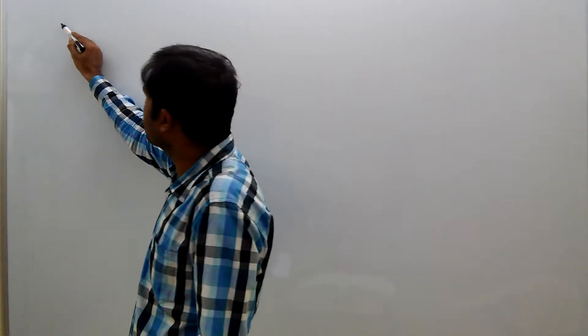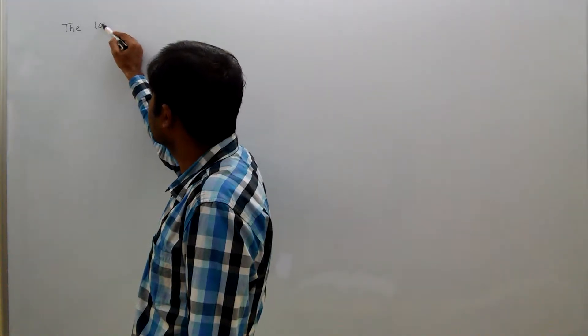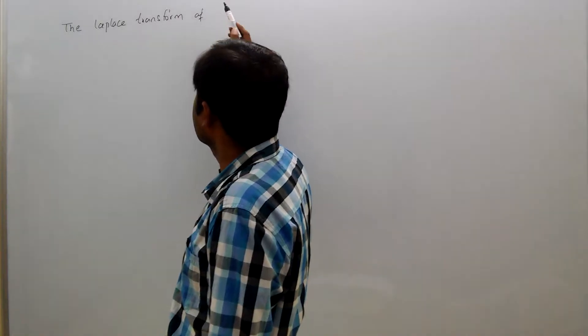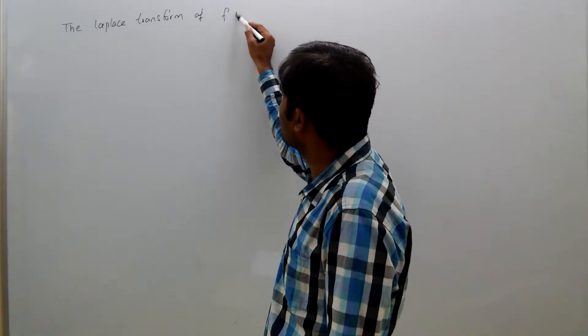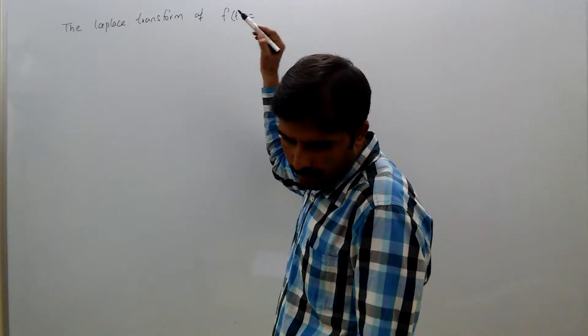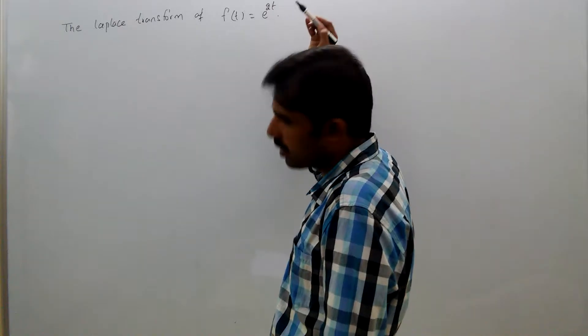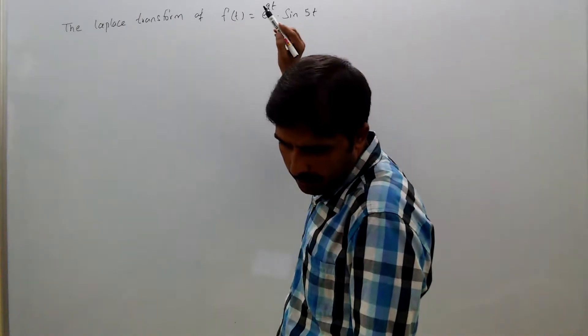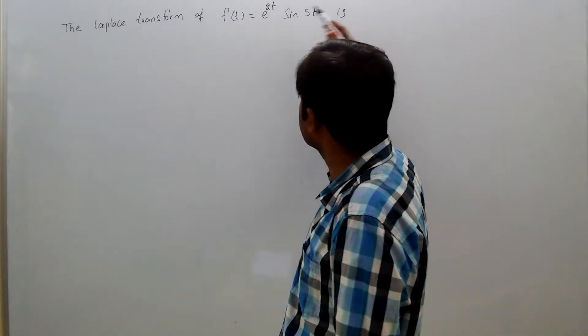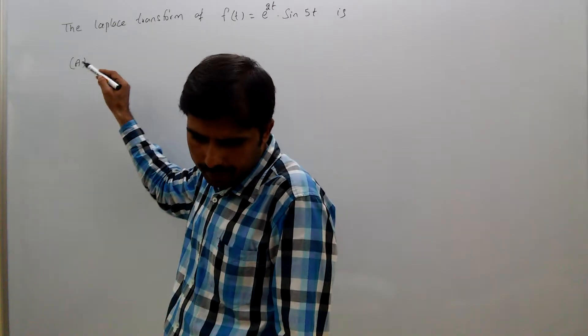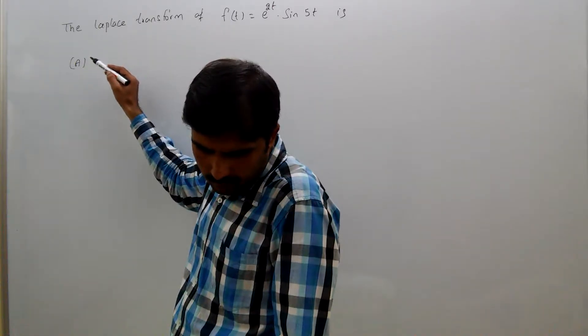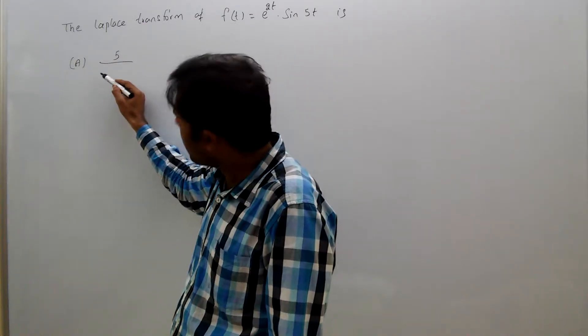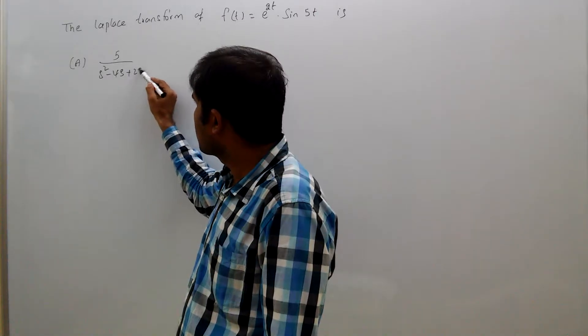The Laplace transform of f(t) = e^(2t) sin(5t) is: option (a) 5/(s^2 - 4s + 29),